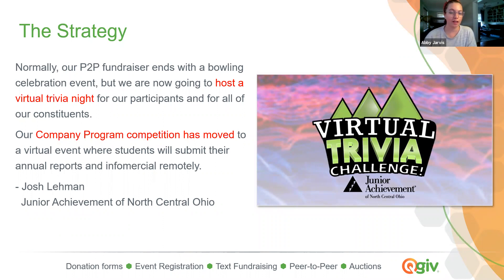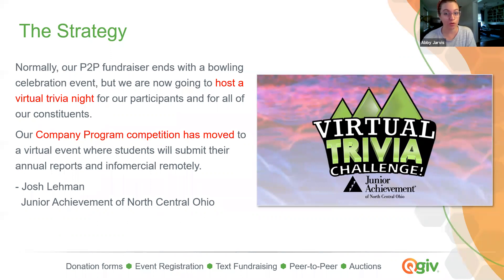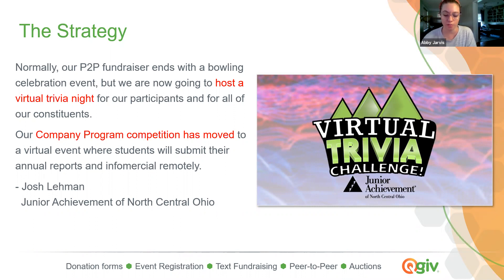Another fun idea for pivoting: JA runs a Bowl-a-Con every year. This year they couldn't actually have the in-person bowling, so they had their traditional peer-to-peer fundraiser, but at the end it culminated in a virtual trivia challenge over Zoom. It ended up being so popular that they actually continued doing Zoom trivia with themes and all kinds of cool ideas — it was a huge hit with their supporters. They also moved other programming they did every year online. This is a great example of a nonprofit that took an opportunity to move things online and saw some success.